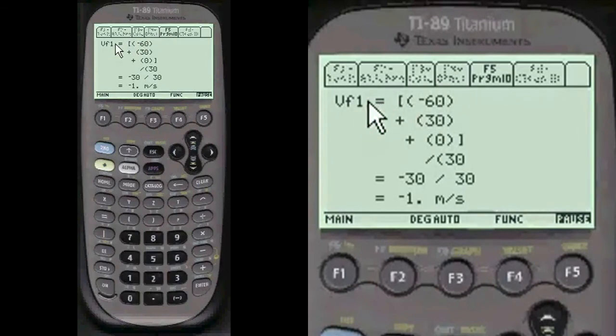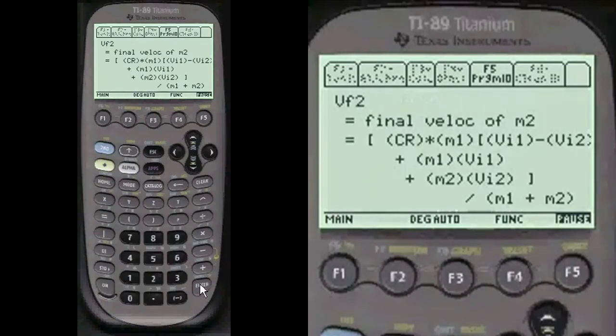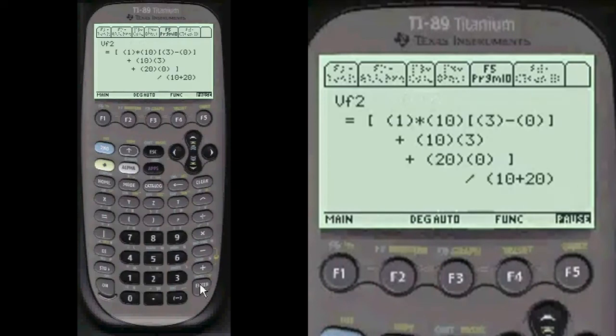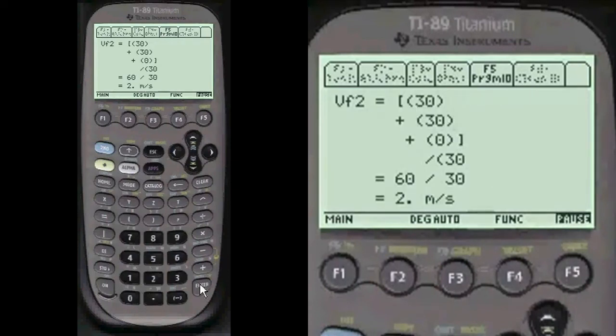And so the final velocity of mass 1 is minus 1 meters per second. Notice that it's going off to the left here with a minus sign. And after they hit, here's the final velocity of mass 2. And 2 is positive, so it's going off to the right 2 meters per second. So that's the calculations. Notice on the test, they do have plus 2 meters per second, so you circle that one and get 100% on it. Pretty neat, huh?